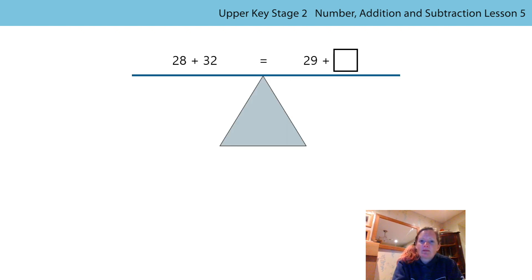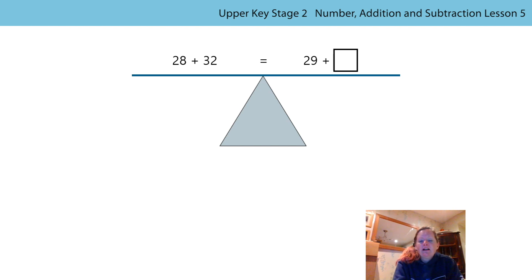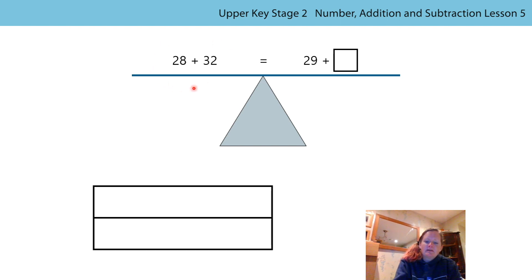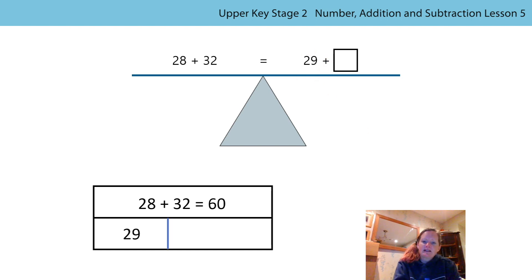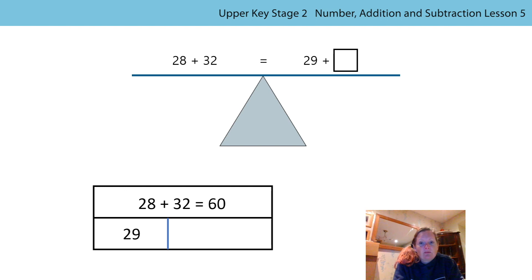I wonder if anyone else used the balance representation like I did. I've got my Year 5 children on one side and my Year 6 children on the other side. The balance is level because I know there are the same number of children in Year 5 as there are in Year 6. How does this representation help me work out how many girls there are in Year 6? Well, I could represent it using a bar model — I know the total is going to be 28 plus 32, which is 60. I've got one part here, so I can use this to calculate the missing part by doing 60 take away 29. But that seems an awful lot of work. I wonder if there's a more efficient way.